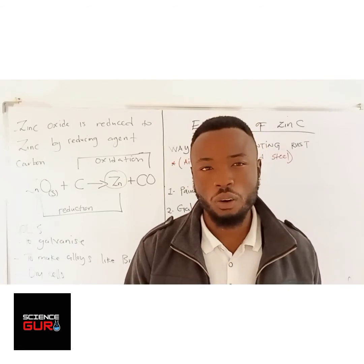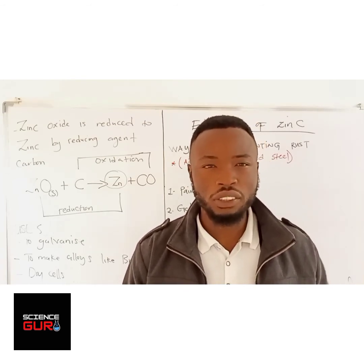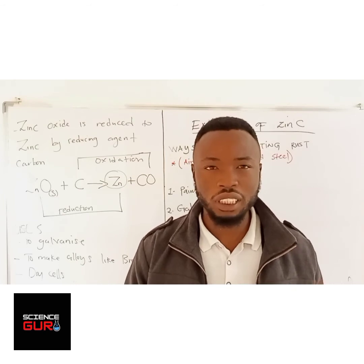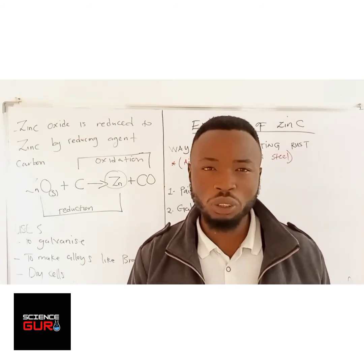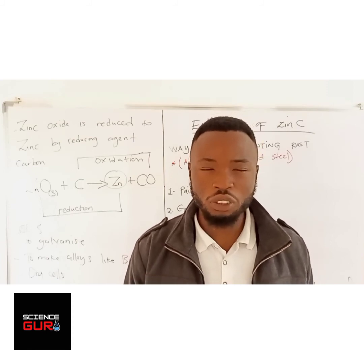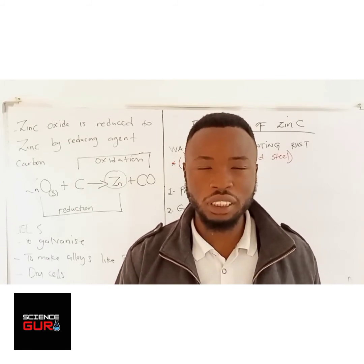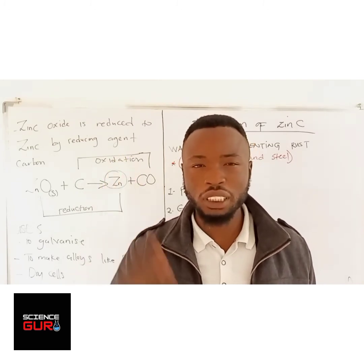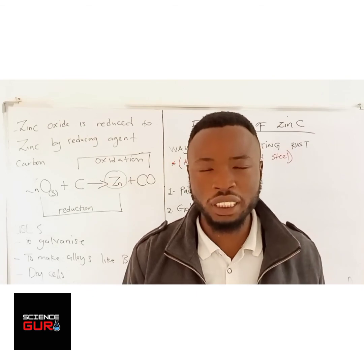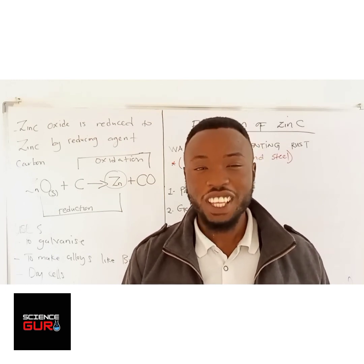Now you are done on the extraction of zinc. The other things to look at under this topic are the extraction of copper and aluminum — examiners may examine you on these. For the extraction of copper, the most important thing to note is that you do not use a reducing agent; you use electrolysis. Take note of what happens at the anode, what happens at the cathode, and what electrolyte is used in the process.